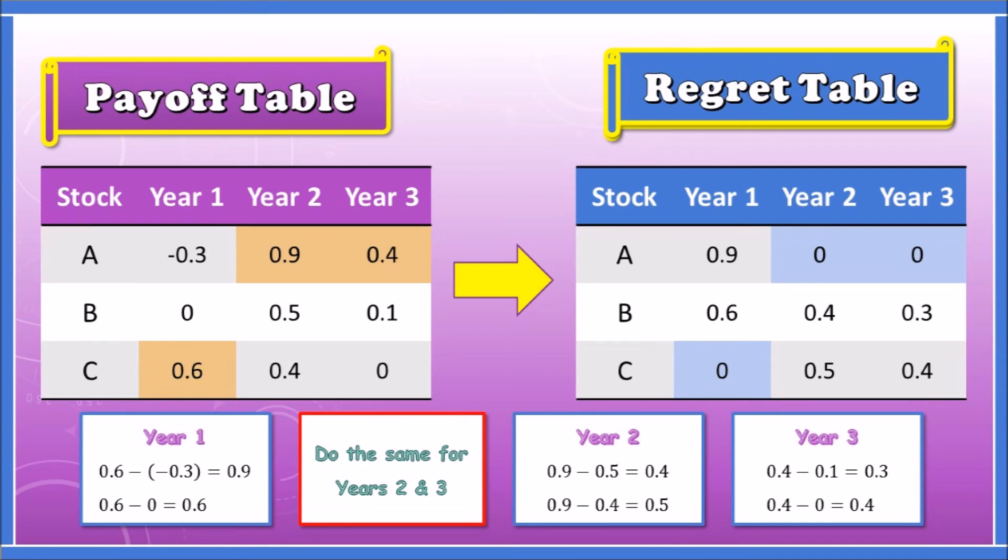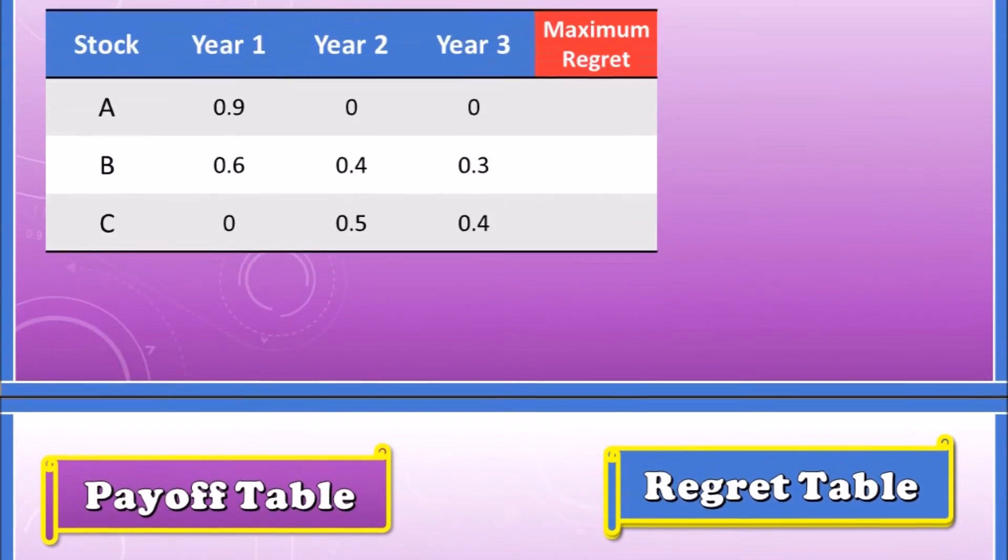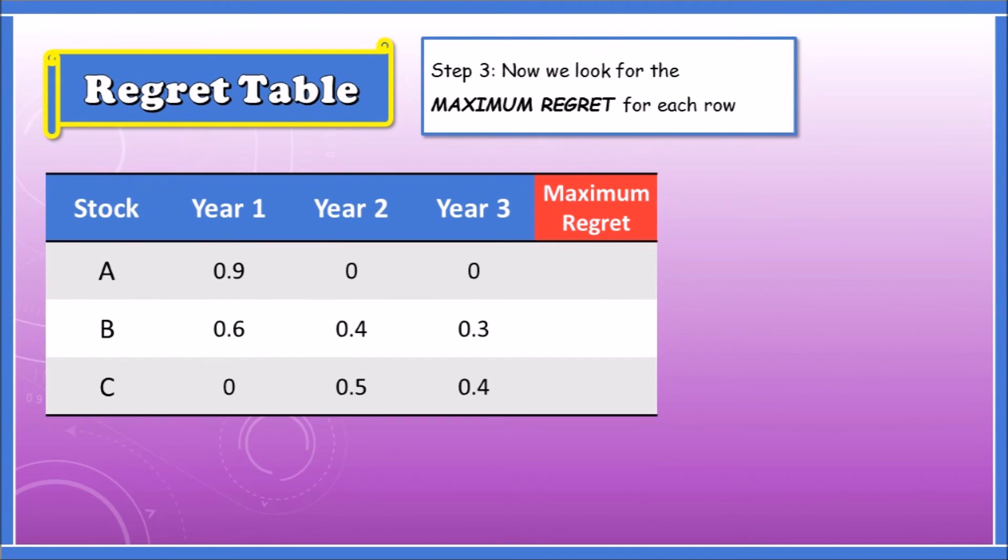Now to find the minimax, we need to find the maximum regret. At this point we'll be able to find the stock that minimizes the maximum regret. By adding a fourth column, I want us to find the highest values in each row.